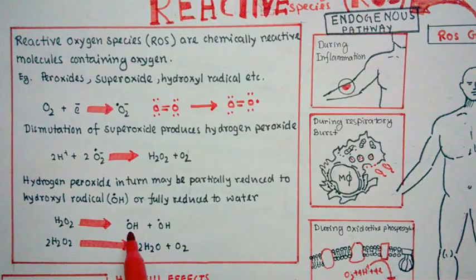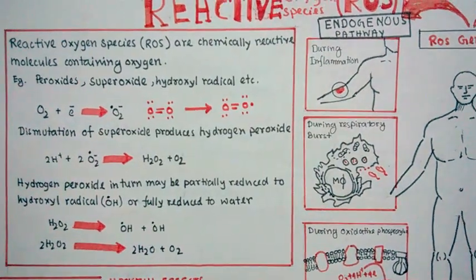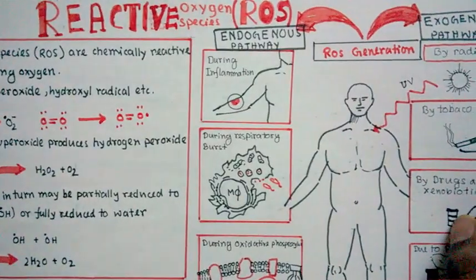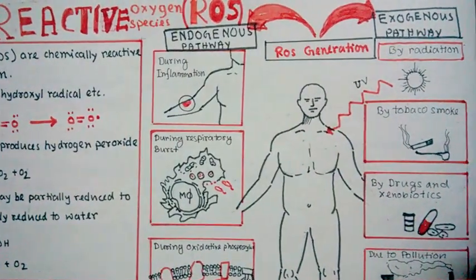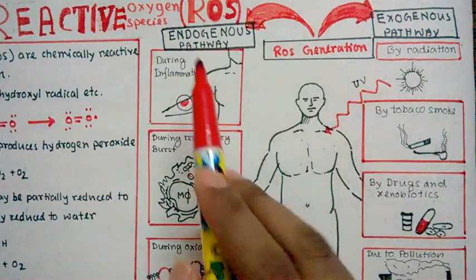So hydroxyl radical is pretty harmful. Now we would see how ROS is generated. There are basically two sources of ROS generation: one is exogenous and one is endogenous. So let's first discuss the endogenous pathway of ROS generation.